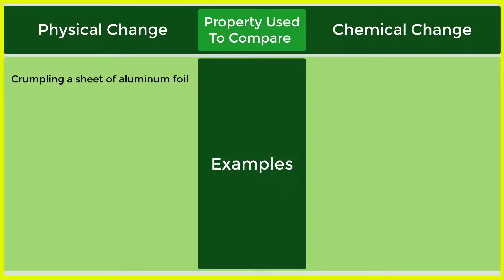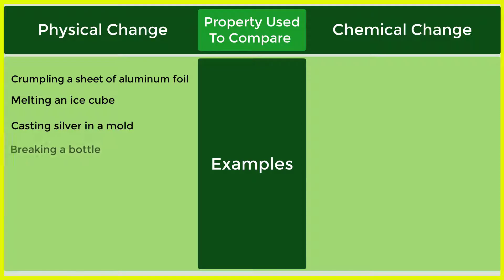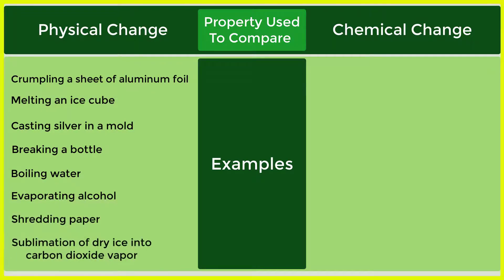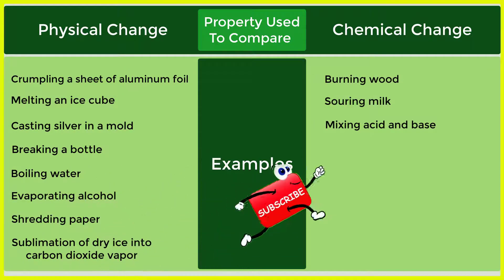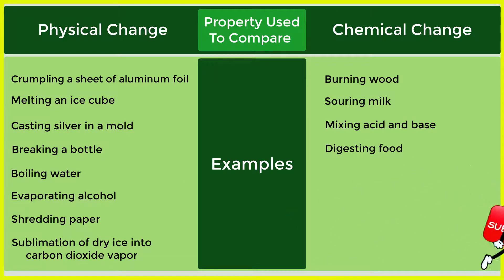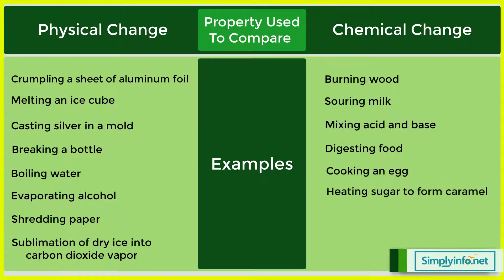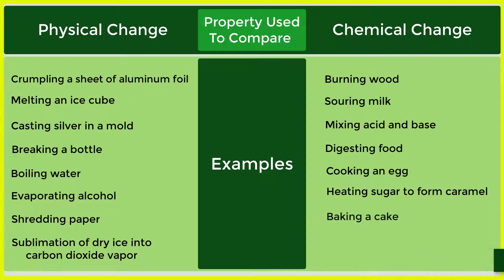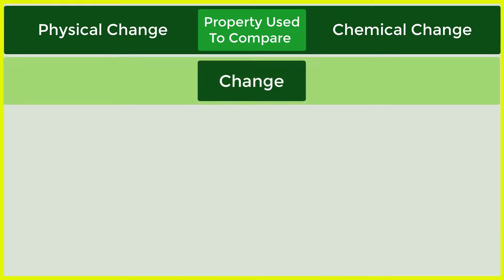Examples of physical change include: crumbling a sheet of aluminum foil, melting an ice cube, casting silver in a mold, breaking a bottle, boiling water, evaporating alcohol, shredding paper, and sublimation of dry ice into carbon dioxide vapor. Examples of chemical change include: burning wood, souring milk, mixing acid and base, digesting food, cooking an egg, heating sugar to form caramel, baking a cake, and rusting of iron.